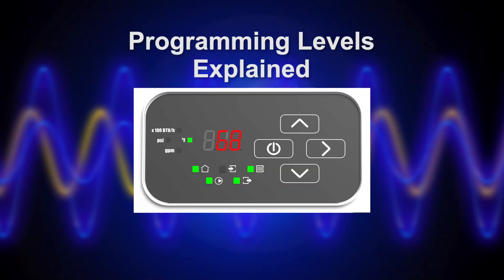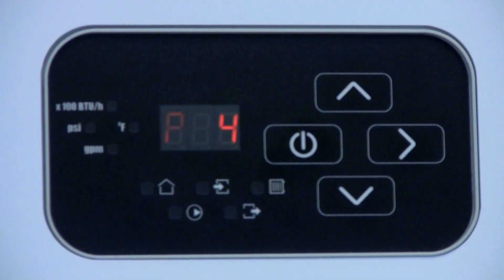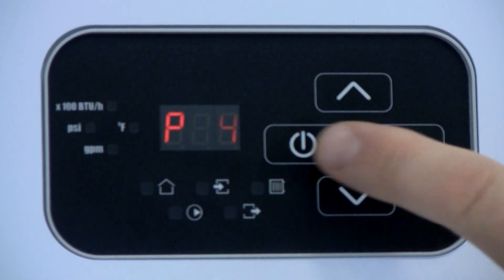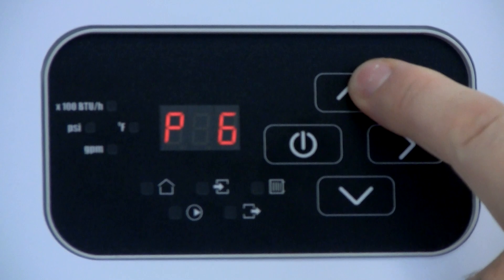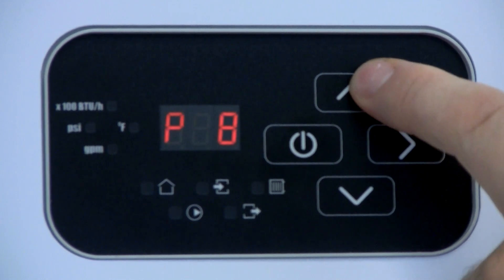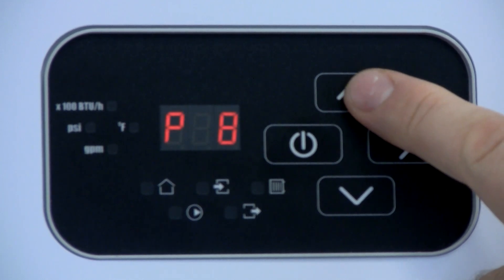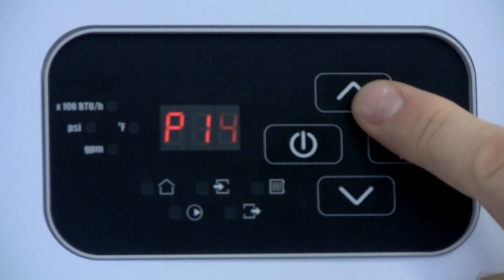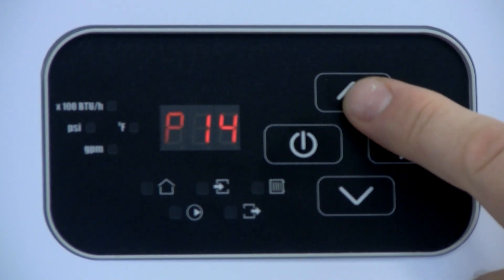All of the program level options explained. The first is the kilowatt rating of the boiler. It could be 4, 6, 8, 12, or 14 and is factory set.